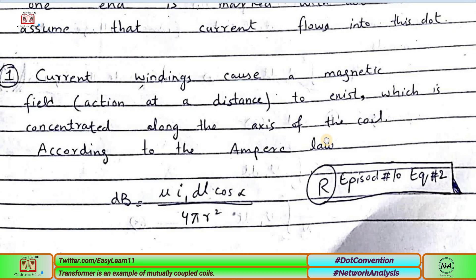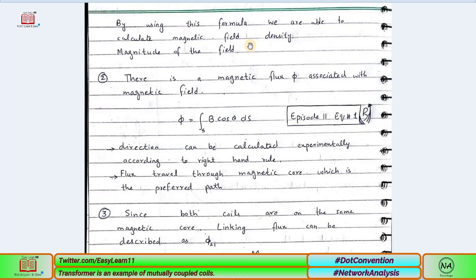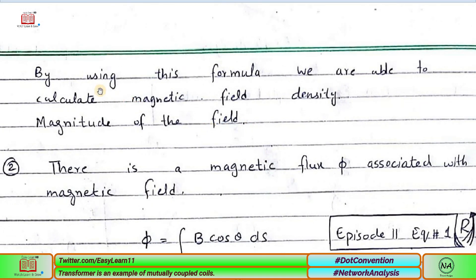We need a specific type of flux that varies with respect to time. Since we already use a time-variant source, our flux is continuously varying with respect to time. According to the modified form of Ampere's law, we need to calculate or define the magnitude of the magnetic field intensity. Using Ampere's law — from episode 10 equation 2 as reference — dB equals μ₀ i dL cos α divided by 4π r². By using this formula, we calculate the magnetic flux density.